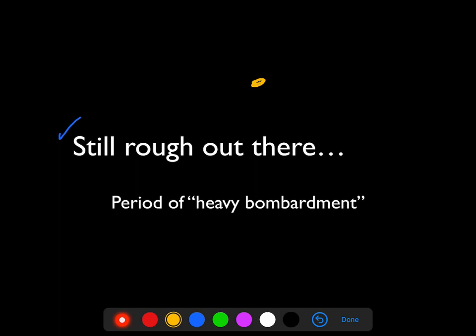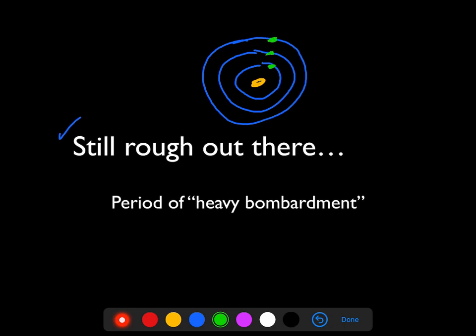When the solar system was starting to resemble what we see today, in other words, all the extra rocks had collided or disappeared, and we started to see planets forming—maybe Mercury, Venus, Earth, and so on—when all that stability started to look a little more familiar,